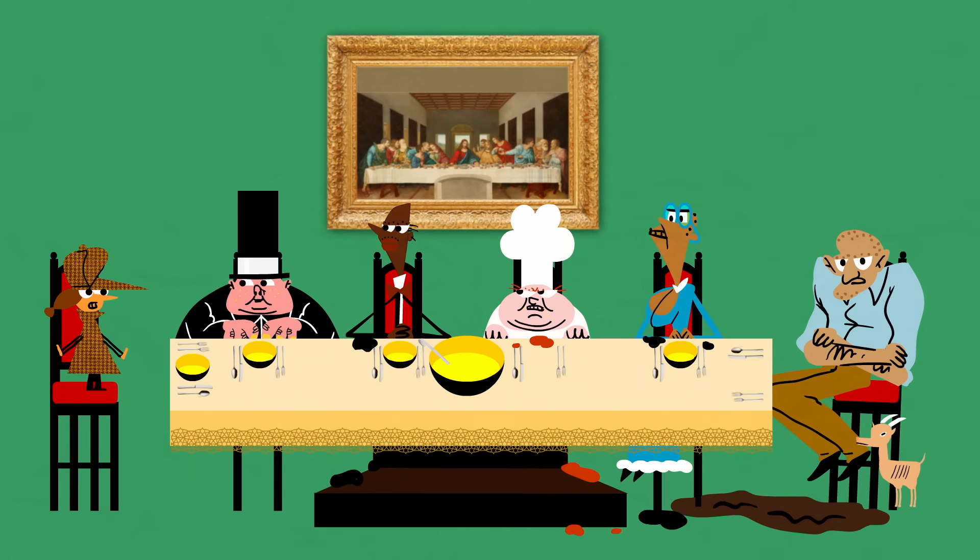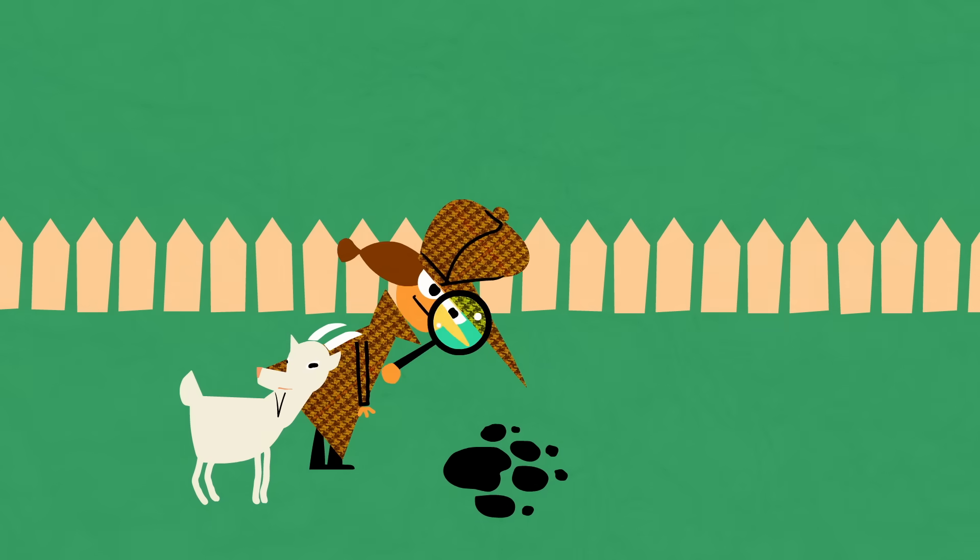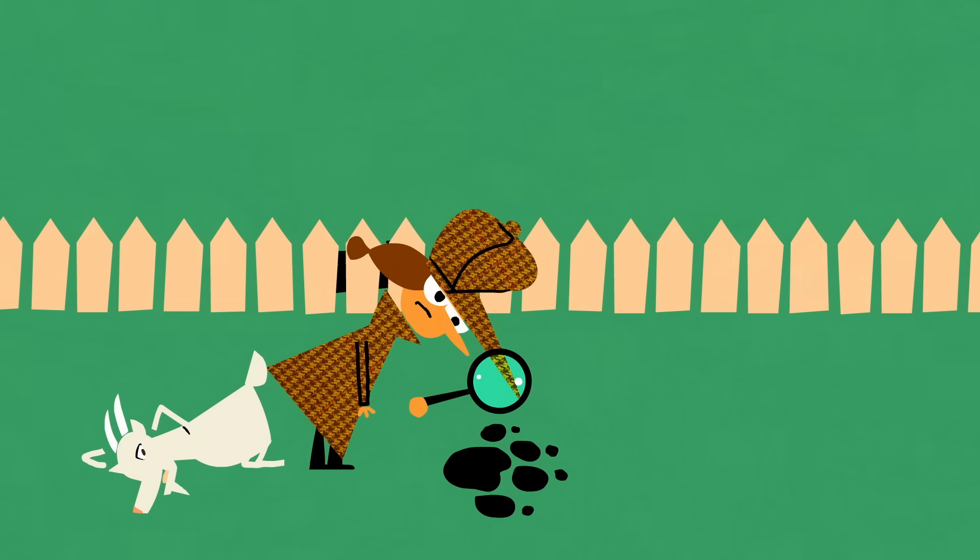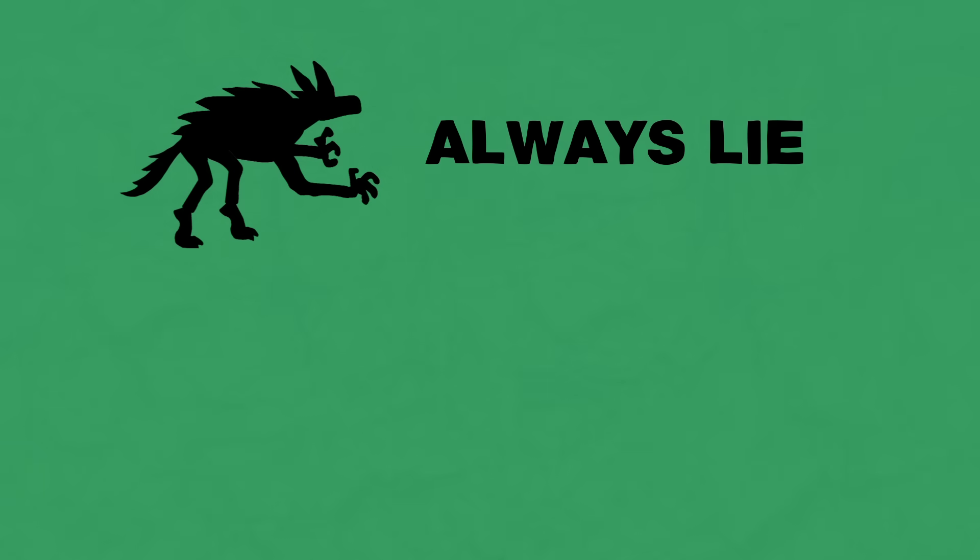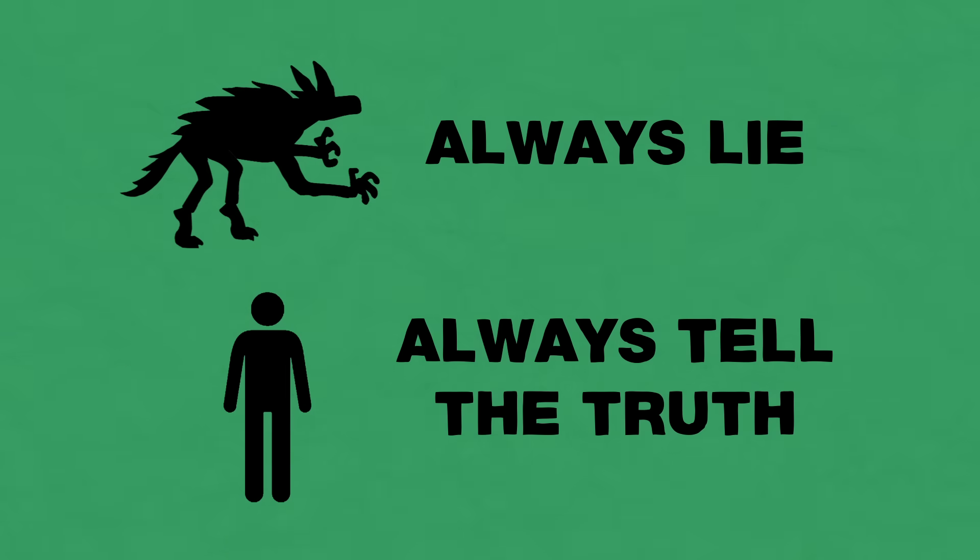But wait, there's more. The carpenter tells you his werewolf curse began in a nearby afflicted village. There, the werewolves can be identified because they always lie, while the humans always tell the truth.